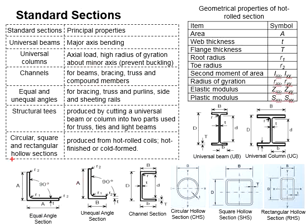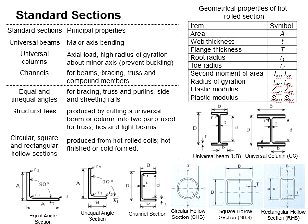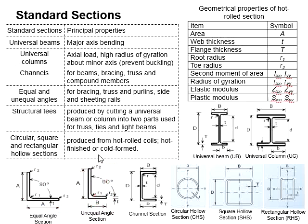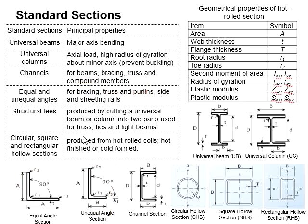There are two types of angles: equal angle and unequal angle. For the equal angle, the aspect ratio between height and width is one to one, while for the unequal angle the ratio is different. These angles are normally used as bracing, truss, purlin, and also side and sheeting rails.